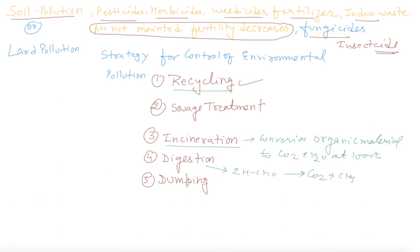Sludge contains nitrogen and phosphorus which act as fertilizers to fertilize the land for agriculture. In the next class we will discuss some important terms like BOD, eutrophication, and a little bit about green chemistry. Till then, goodbye.